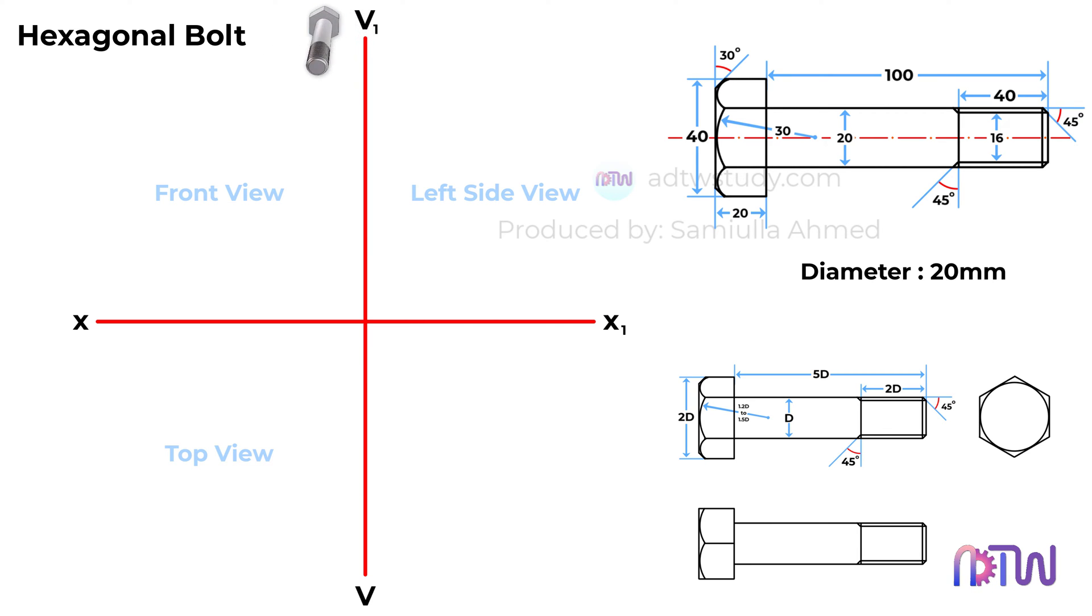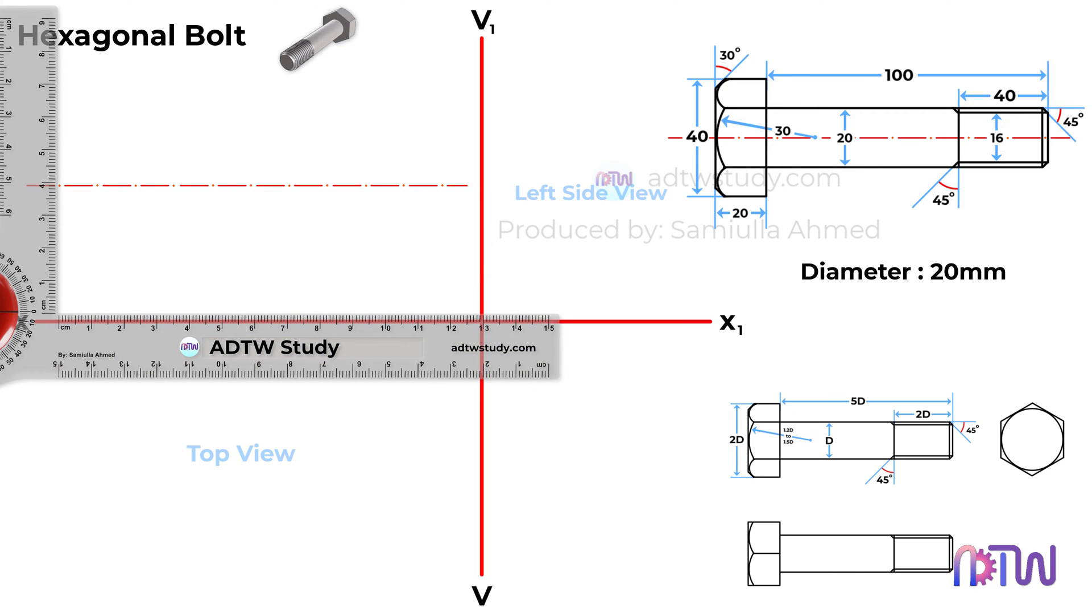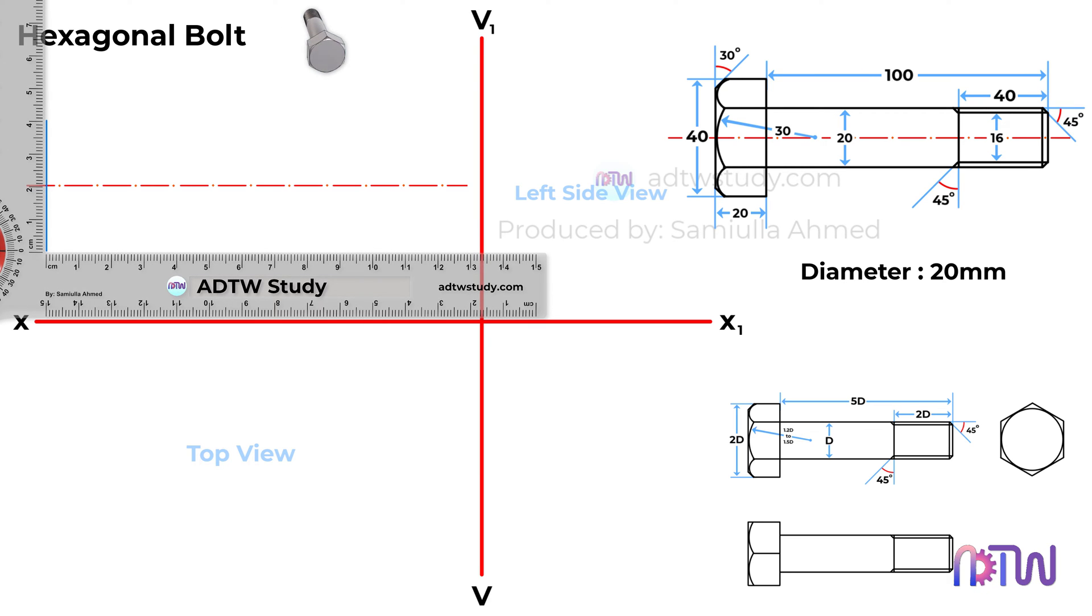Armed with these specifications, we can commence the drawing process. To begin, take a drafter and draw the axis line. We'll commence with the head of the bolt by drawing a rectangle measuring 40mm in width and 20mm in length.